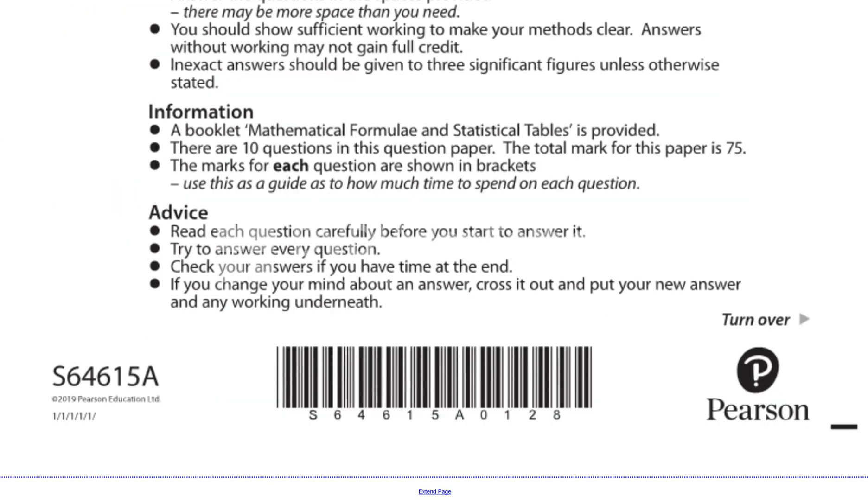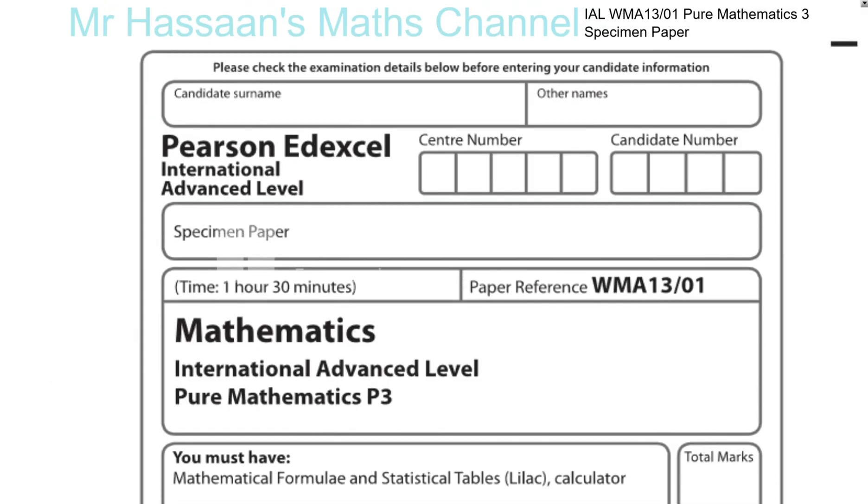It's mainly based on the old C3, except they've added something in logarithms, and they've also taken some of the integration from C4, the old C4, and some of the basic integration and placed that in C3. Those are the two main differences between this and the C3 paper of the past. Now let's get straight into it.